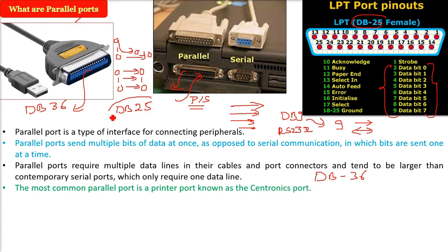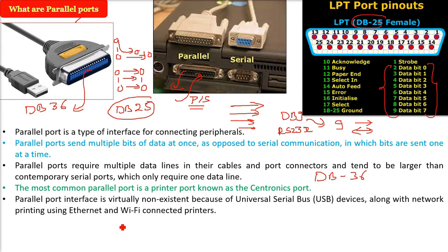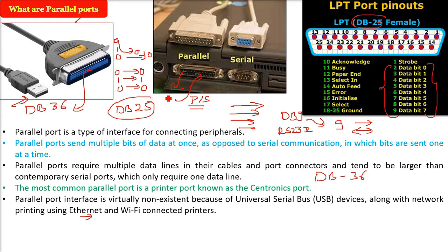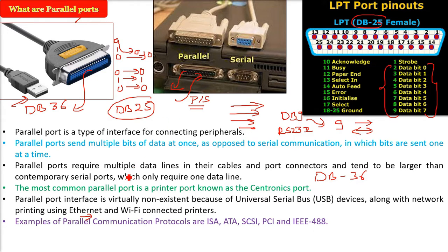The most common parallel port is the printer port, known as the Centronics port, found in various systems. However, parallel port interfaces are now virtually non-existent because of the advent and growth of USB devices, along with network printing using Ethernet and Wi-Fi connected printers. Now you simply send a print command and it prints wirelessly.